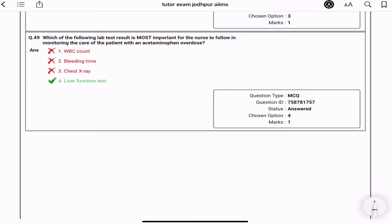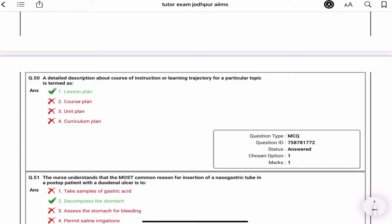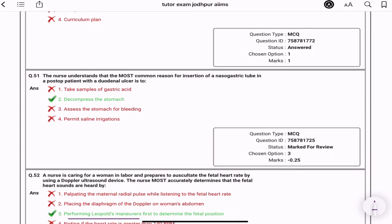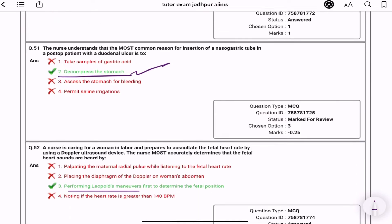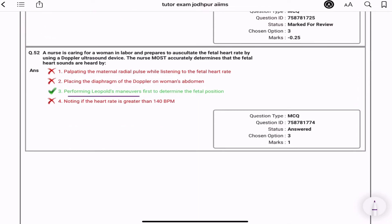A detailed description about the course of instruction on learning trajectory for particular topic is lesson plan. The nurse understand the most common reason for insertion of NG tube in post-op patient with duodenal ulcer is to decompress the stomach. The nurse is caring for a woman in labor to auscultate fetal heart rate by Doppler ultrasound. The nurse most accurately determine the fetal heart sound are heard by what? Aap kya karoge? Matlabi aap ke pas thik hai Doppler ultrasound lekin abdomen pe kaha place karoge to kya karna padega? Leopold maneuvers perform karna padega. Fetal ki spine vegar aap check kar loge, aapko fir pata chal jayega ki kaunsi site pe aapko Doppler place karna.